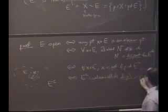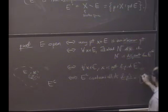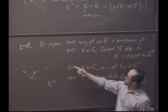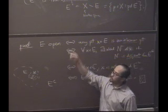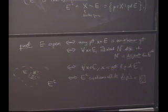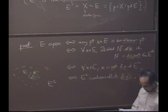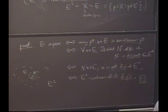And notice, of course, I wrote this with all the implications bidirectional. You can check that the same proof works backwards. So we have e's open if and only if its complement is closed.